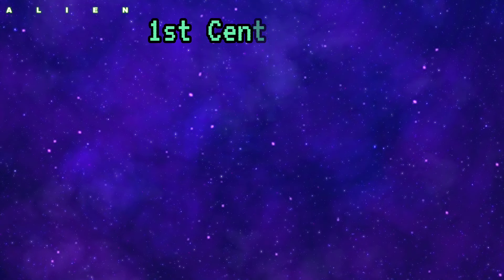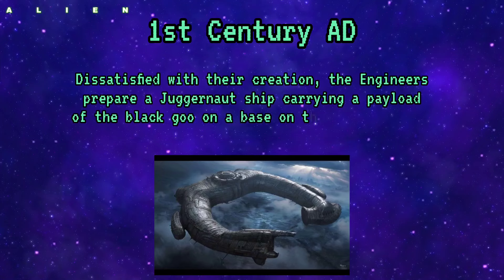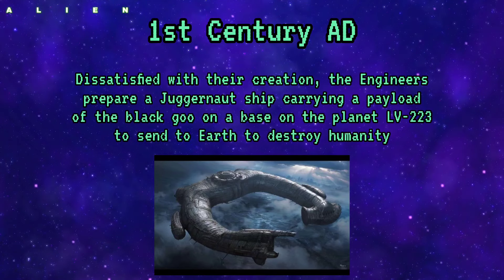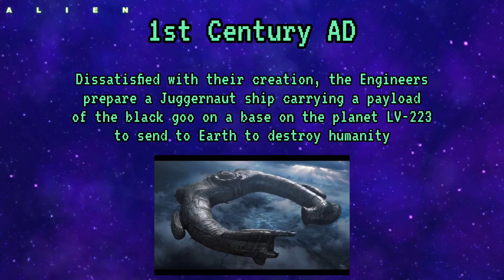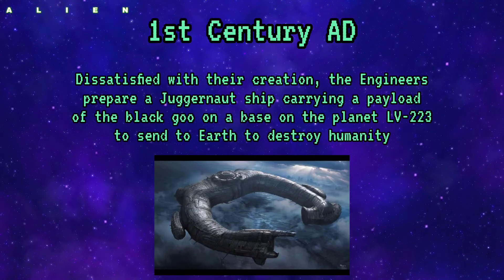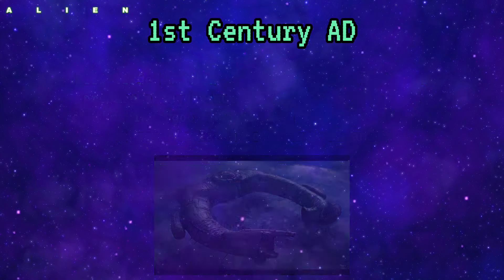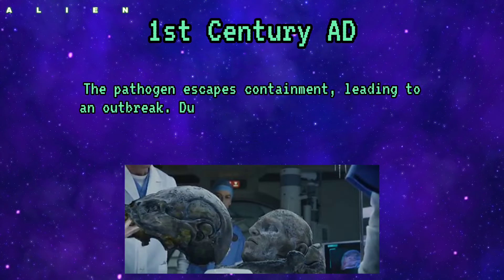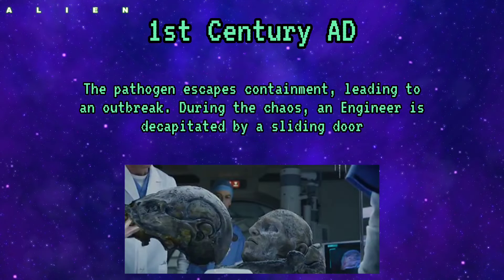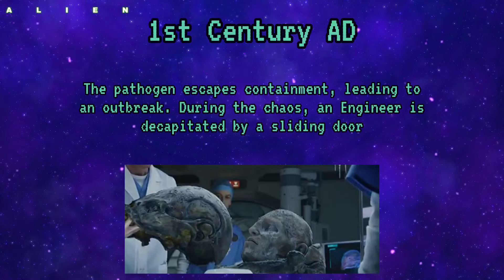1st Century AD: Dissatisfied with their creation, the Engineers prepare a juggernaut ship carrying a payload of black goo on a base on the planet LV-223 to send to Earth to destroy humanity. The pathogen escapes containment, leading to an outbreak. During the chaos, an Engineer is decapitated by a sliding door.